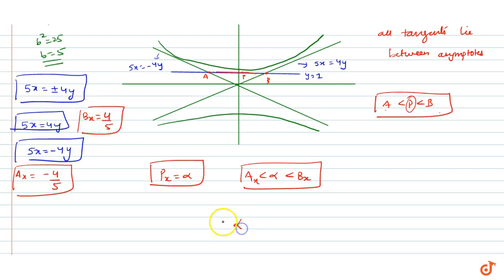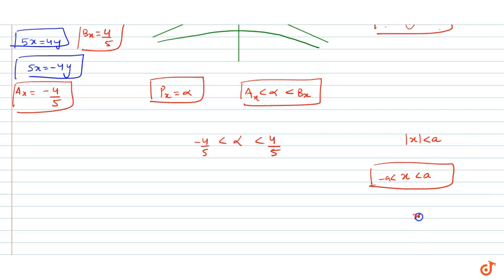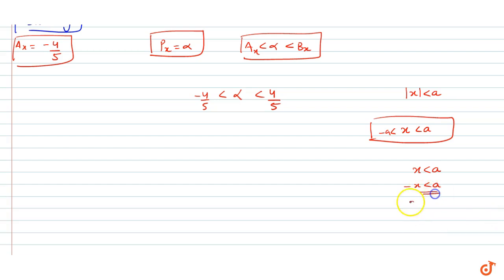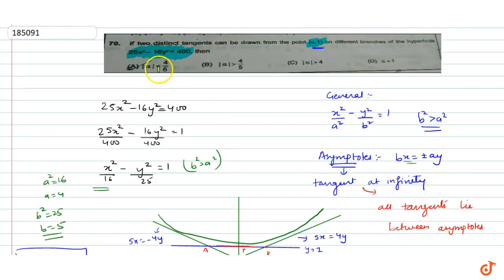This means alpha lies between −4/5 and 4/5. Now we know that if |x| < A, then x lies between −A and A. Taking the intersection of both regions, this is the required relation. Checking the options, option A is the correct answer. This is our solution.